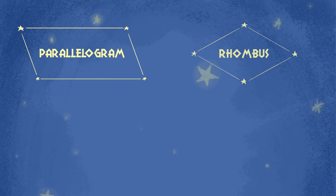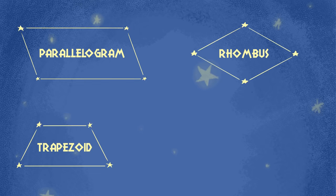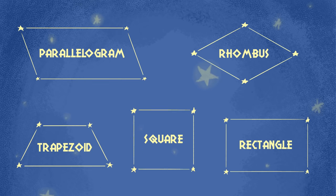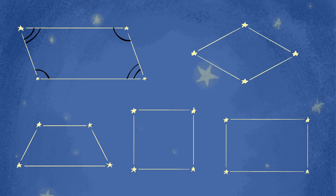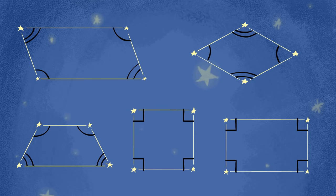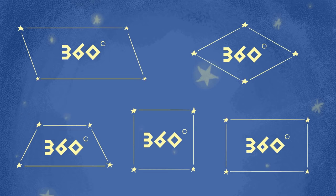Parallelograms, rhombuses, trapezoids, squares and rectangles. And if you add the angles inside each of these, there will be 360 degrees.